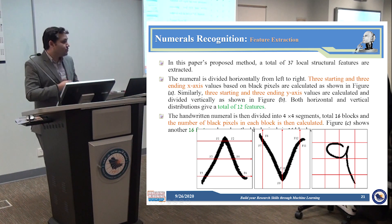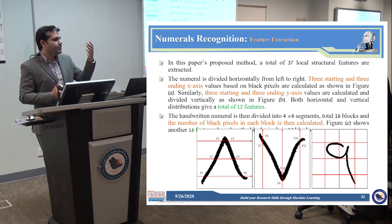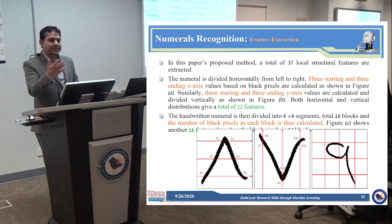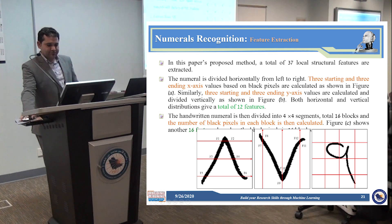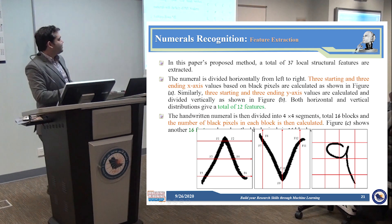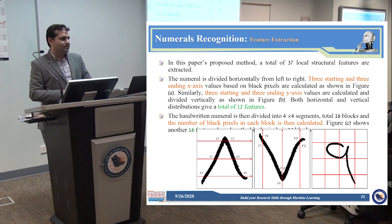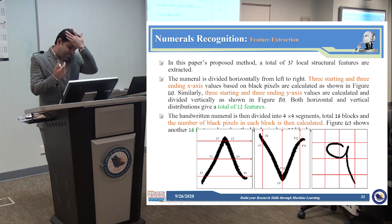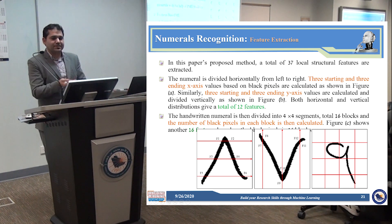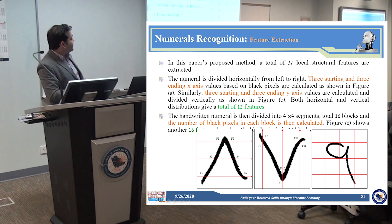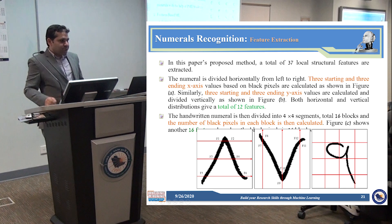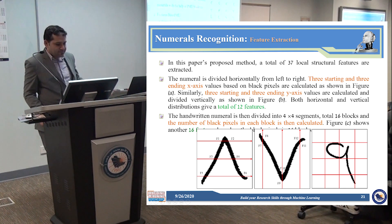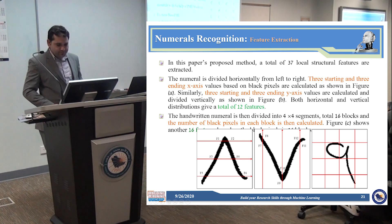When we need to recognize numerals, consider how our brain processes them: based on shape. For example, 1 looks like a straight line, 2 is a different shape, and so on. We proposed a method to extract features based on the shape. If we look at an image representing the Arabic numeral 8, we divide the image into three rows of equal distribution and find the starting point and ending point — just the pixel location on the x-axis — for each row.